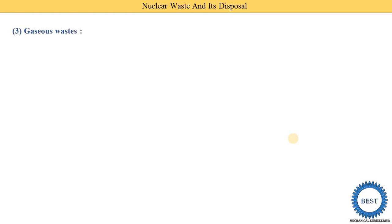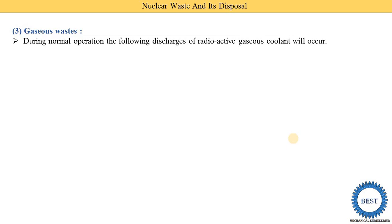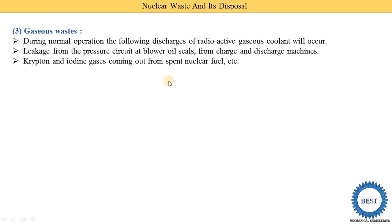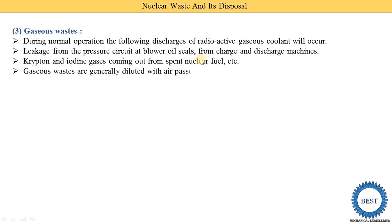The third type is gaseous waste. During normal operation, the following discharge of radioactive gases and coolant occurs: leakage from the pressure circuit at the blower oil seals, from the charge and discharge machines, and krypton and iodine gases coming out from spent nuclear fuels. These gases are radioactive because they originate from the nuclear fuels.